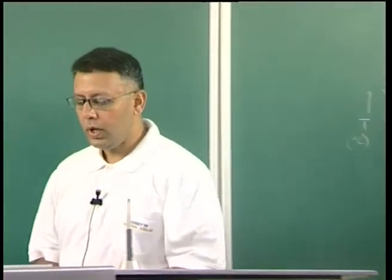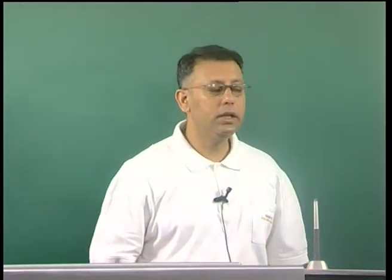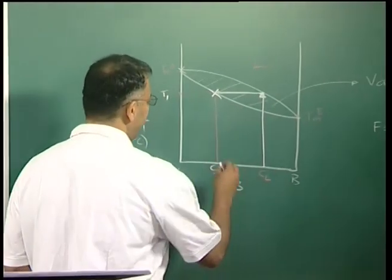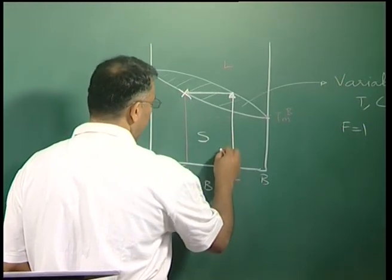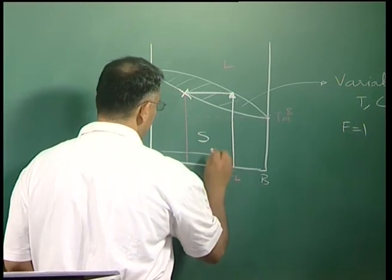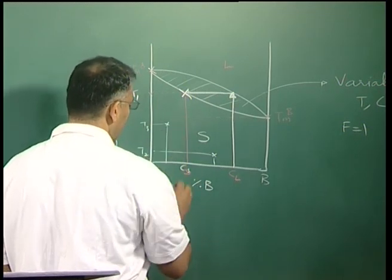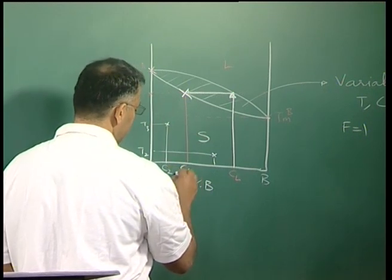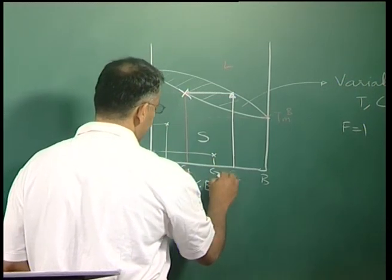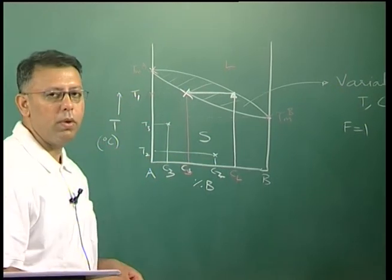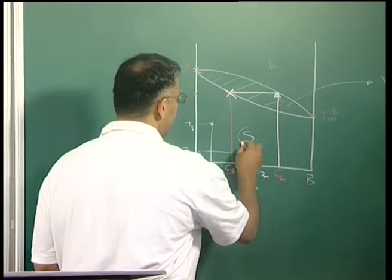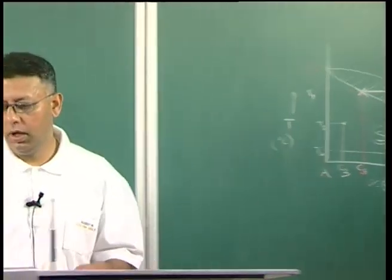So the important point is that in the two-phase region I have only 1 degree of freedom, while in the single-phase solid region I have 2 degrees of freedom — I can independently choose both temperature and composition. I can choose, say, composition C2 at temperature T2, or composition C3 at temperature T3, and still remain in the single-phase solid region. This higher degree of freedom (2) in single-phase regions contrasts with the lower degree of freedom (1) in the two-phase solid–liquid coexistence regime.